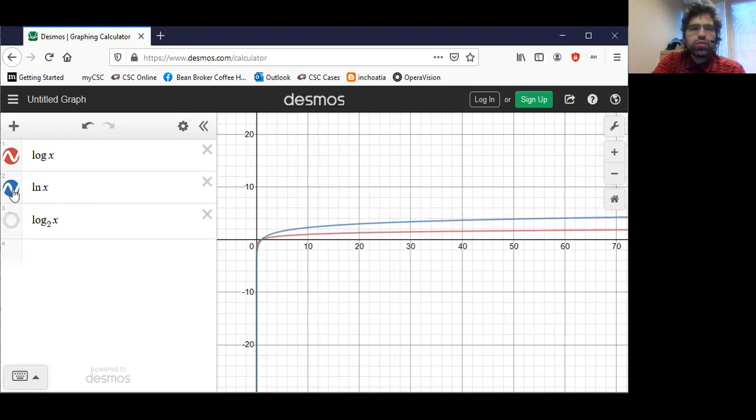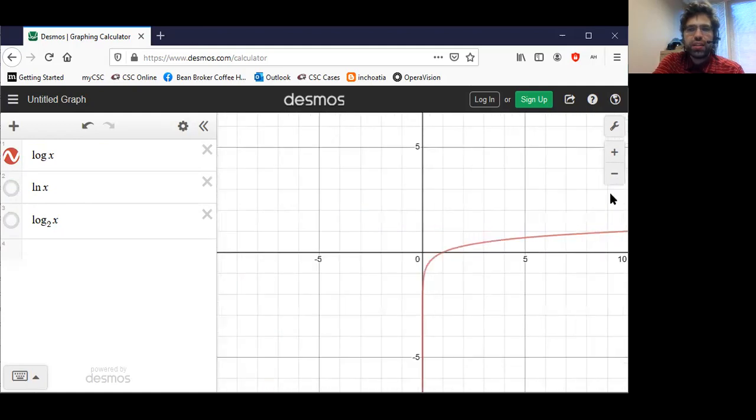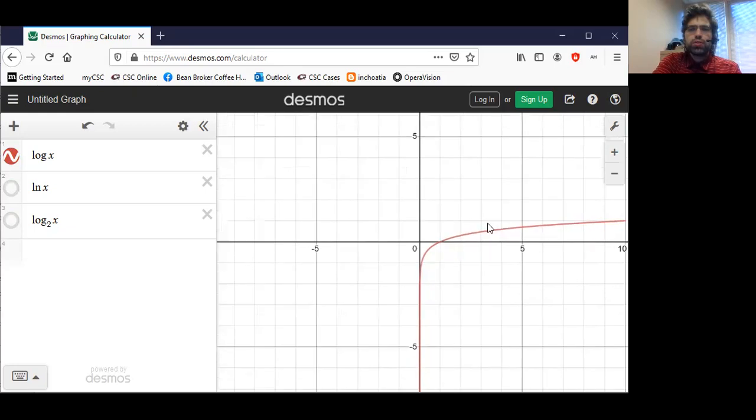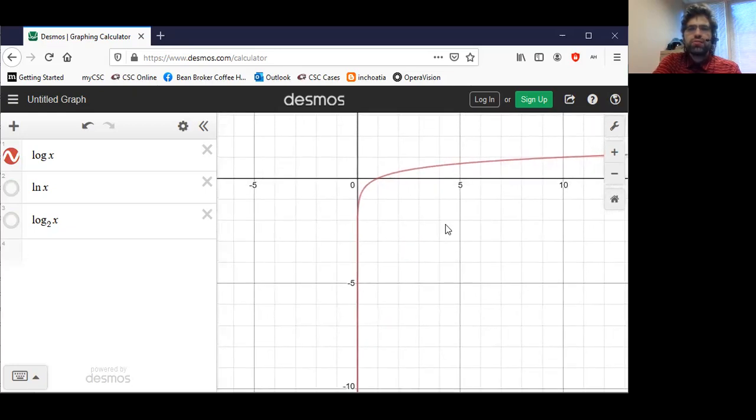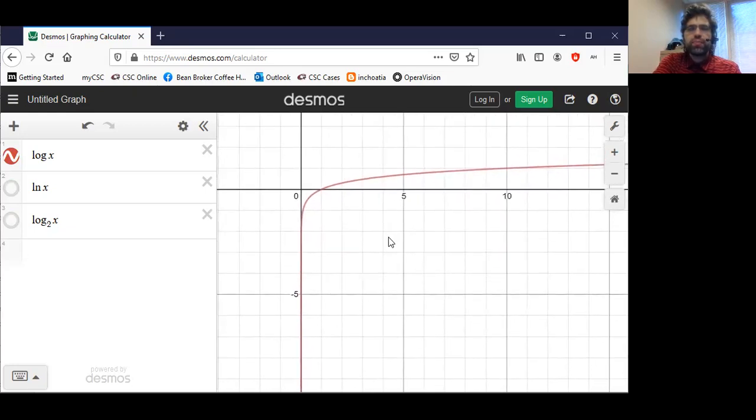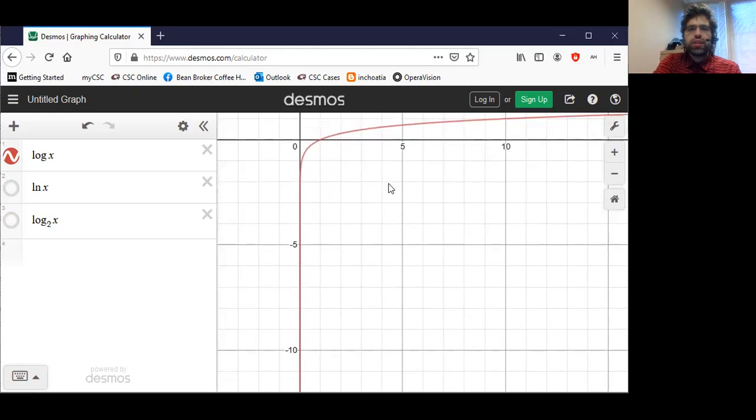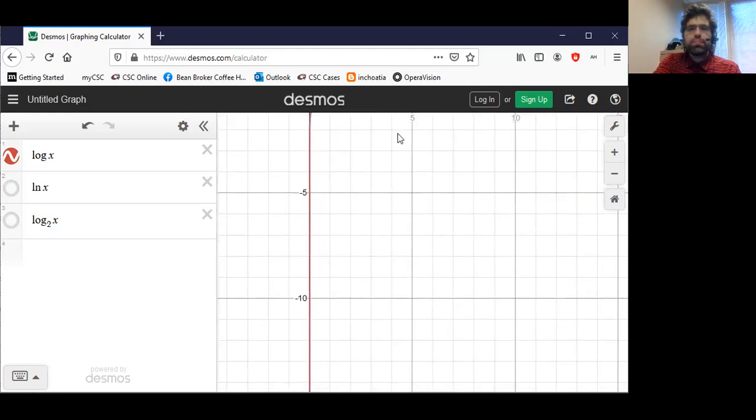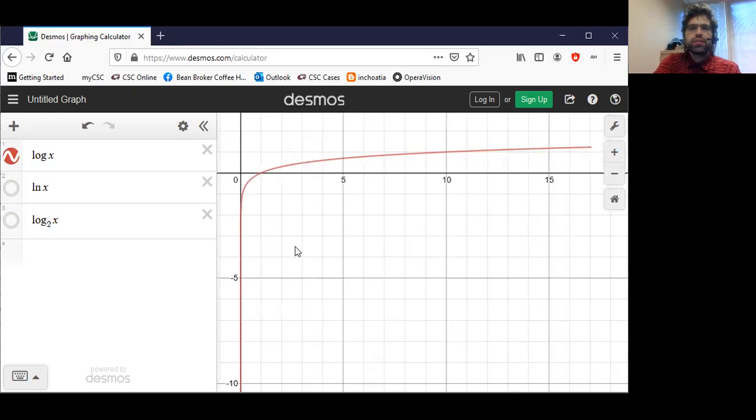So let's just pick the common logarithm as being representative of them. And let's see what properties this has. It has a vertical asymptote at zero.